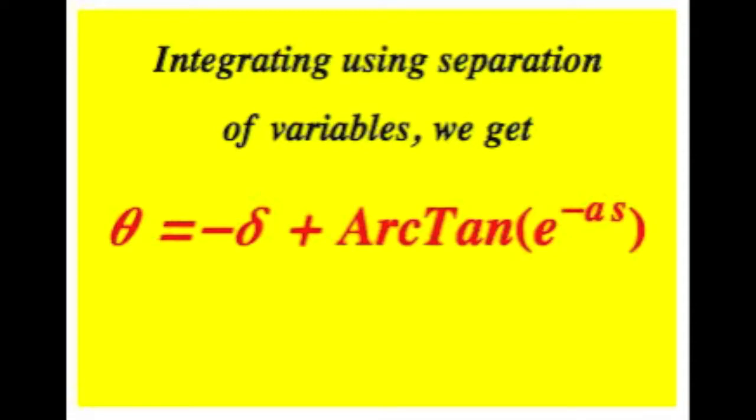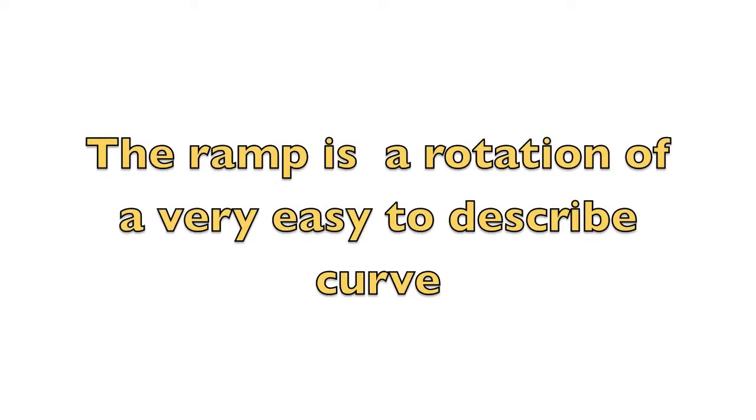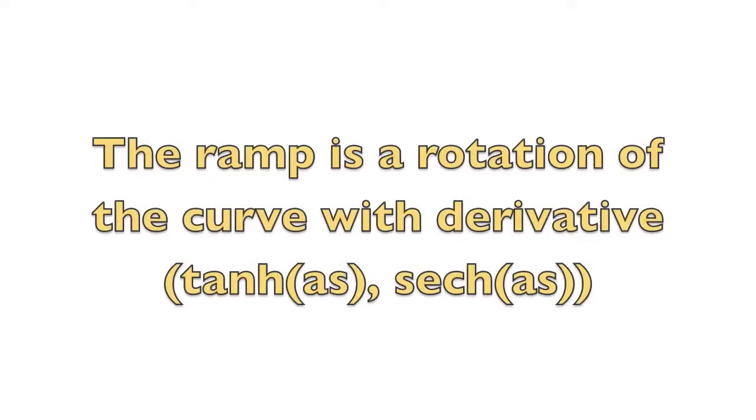Once we explicitly have the function theta of s, we can find the curve that describes the ramp. This ramp must be a rotation of the curve with velocity vector hyperbolic tangent of a times s, hyperbolic secant of a times s.